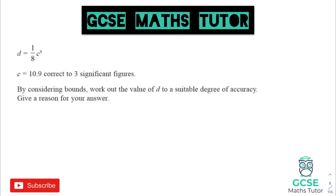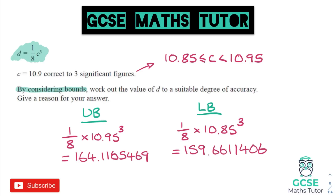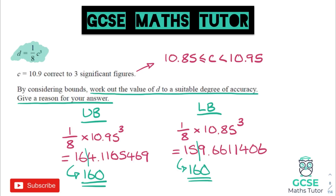When you're looking at bounds with a fraction, it's a little more complex — we need to write down the error intervals for each number in the question. Here we only have one, so write the error interval for C and substitute it into our formula. The upper bound uses the larger bound and the lower bound uses the lower bound. Plug them both in, and if you're asked by considering bounds to work out to a suitable degree, you want to see how they both round the same. For this one they don't round the same to three significant figures but they do to two significant figures — so we'd write two significant figures.